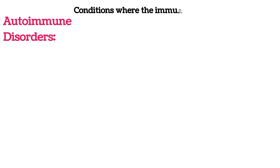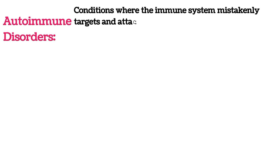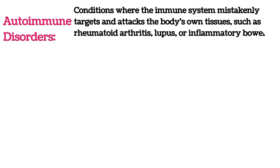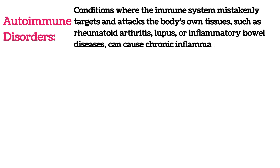Autoimmune disorders: conditions where the immune system mistakenly targets and attacks the body's own tissues, such as rheumatoid arthritis, lupus, or inflammatory bowel diseases, can cause chronic inflammation.